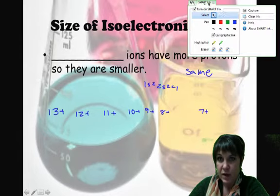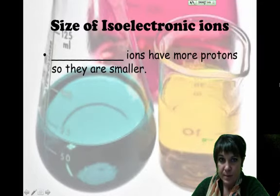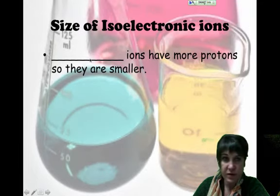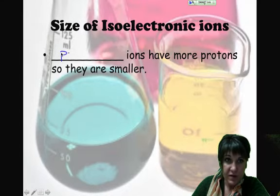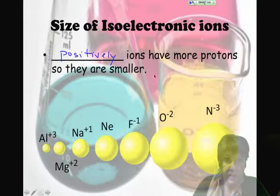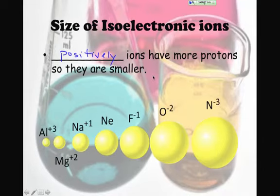What we know is that the cations, the positively charged ions, have more protons, so they're going to be smaller. Here's a picture of the atomic radii. Aluminum is certainly the smallest. Nitrogen, having only 7 protons, is going to be the largest ion of these.